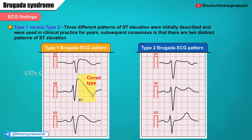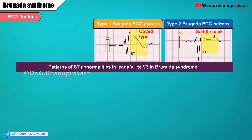In the type 2 Brugada ECG pattern, which is combined from the original designation of type 2 and type 3 patterns, the ST segment has a saddleback ST-T wave configuration in which the elevated ST segment descends downwards to the baseline, then rises again to an upright or a biphasic T wave, giving the characteristic appearance of a saddleback.